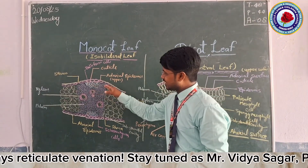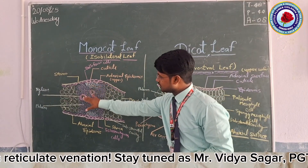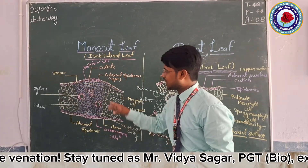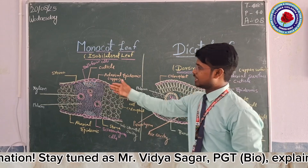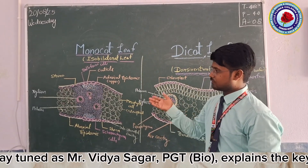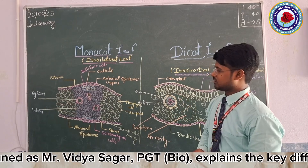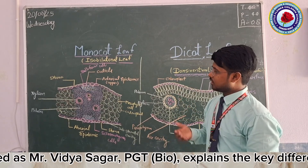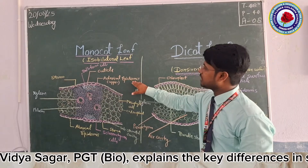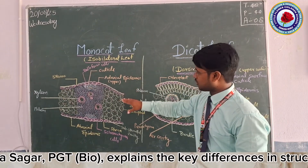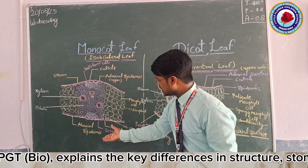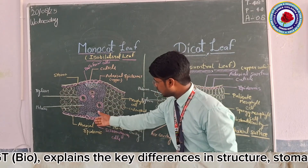Scattered throughout are a large number of phloem as well as xylem cells. Xylem helps in water transport as we have learned, and phloem is responsible for food transportation. The adaxial epidermis is the upper part of the epidermal layer, while the abaxial epidermis is the lower part of this cell layer.